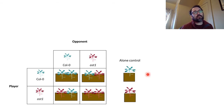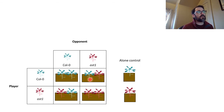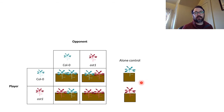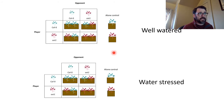As a control we grew them alone to get a sense of how these plants grow without competition. This isn't necessarily relevant to the game, but it's interesting to compare plants grown alone versus with neighbors. I like to keep the amount of soil per plant the same, so the pots with two plants are actually twice as wide as the alone pots, giving each plant access to the same amount of soil.